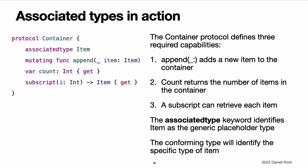Any type that conforms to the container protocol must be able to specify the type of values it stores. Specifically, it must ensure that only items of the right type are added to the container, and it must be clear about the type of items returned by its subscript. To define these requirements, the container protocol needs a way to refer to the type of the elements that a container will hold without knowing what that type is for a specific container. The container protocol needs to specify that any value passed to the append method must have the same type as the container's element type, and that the value returned by the container's subscript will be of the same type as the container's element type. To achieve this, the container protocol declares an associated type called item.